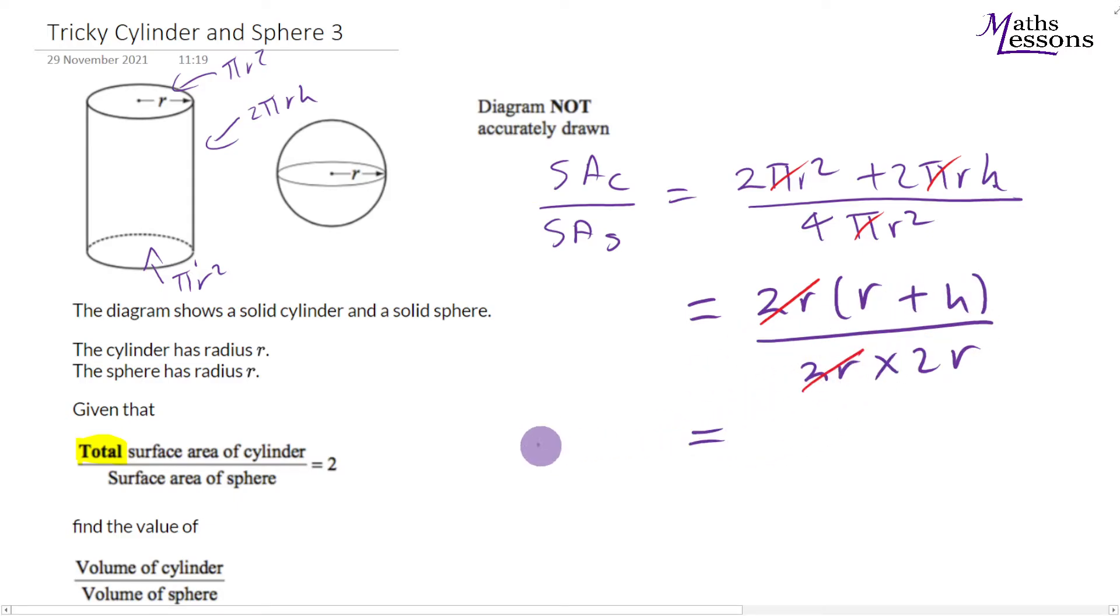So we know that r plus h over 2r will equal 2. We can get a relationship between h and r which is going to be very useful. So r plus h equals 2r times by 2, which is 4r. So h will equal 3r.